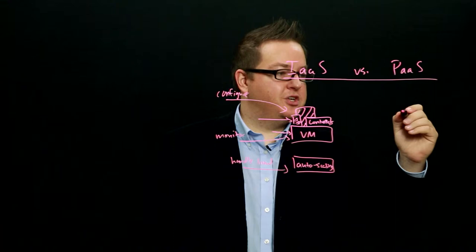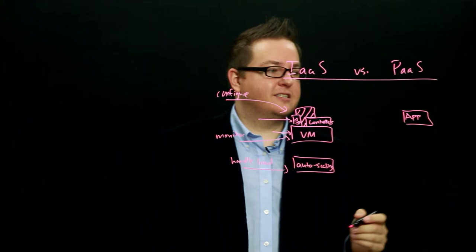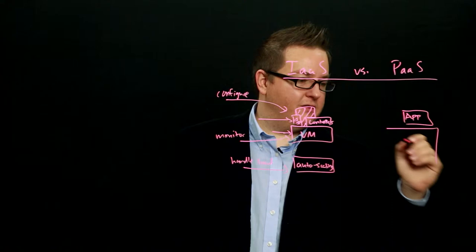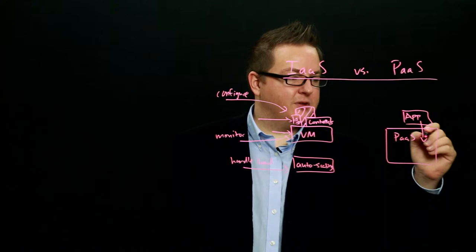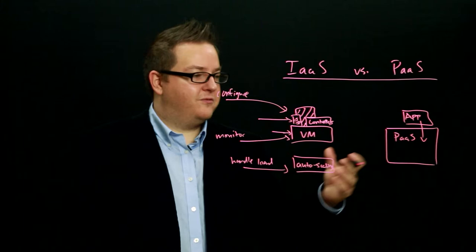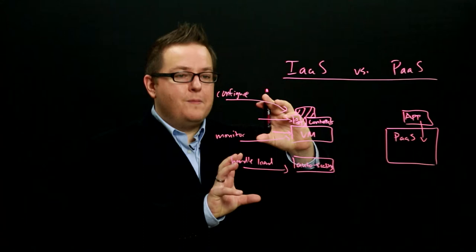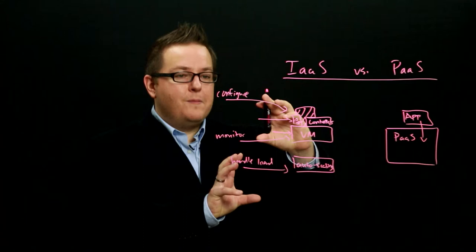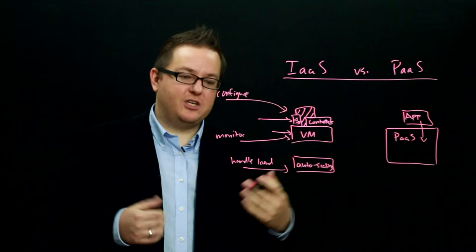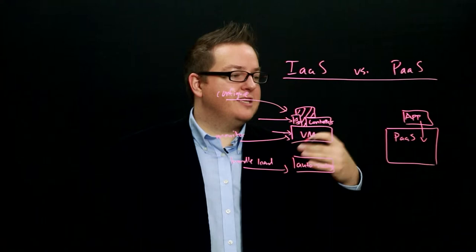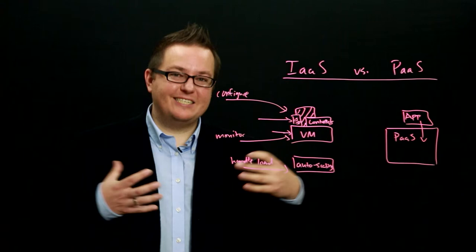With platform as a service, you provide your application — such as a web application WAR file with controllers to handle requests — and the platform as a service automatically takes your application, configures a web container, configures the underlying virtual machine, decides all the security settings, and decides when to scale it up or down and how much capacity it needs, and runs it for you. The advantage is it removes the complexity of how to set up machines, when to add machines, and how to monitor them.